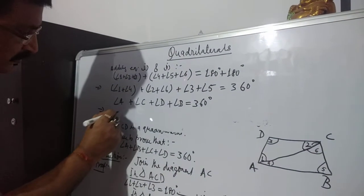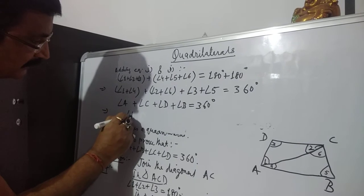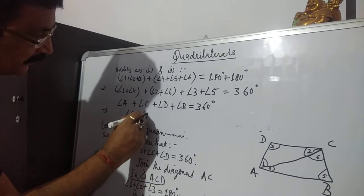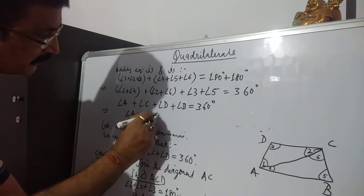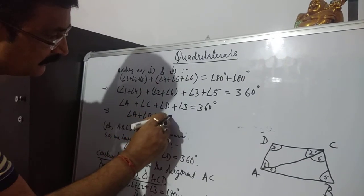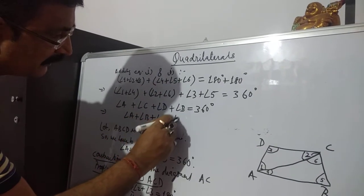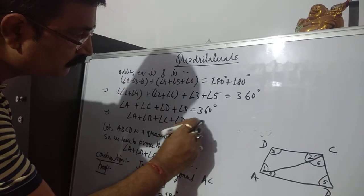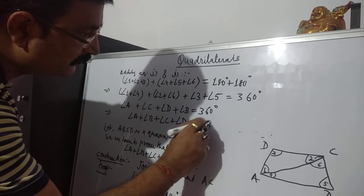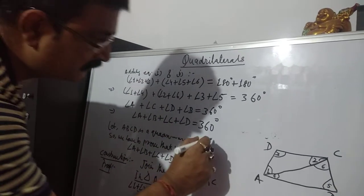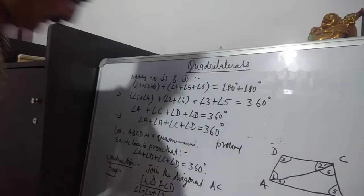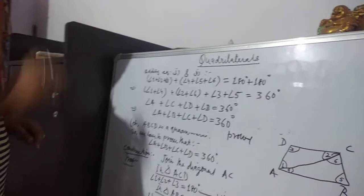Rearranging in order: angle A plus angle B plus angle C plus angle D equals 360 degrees. Understood.